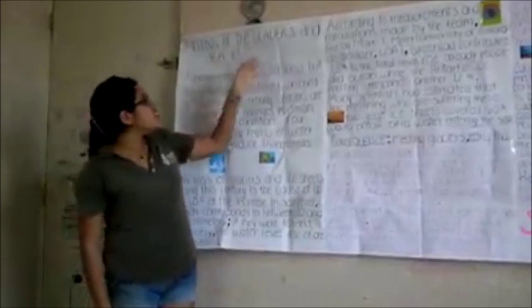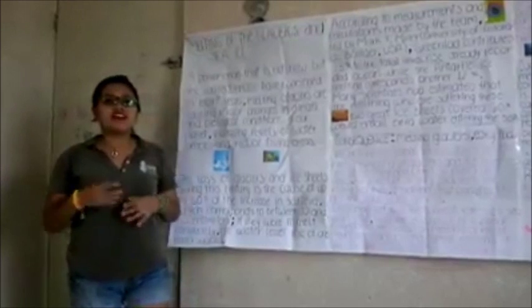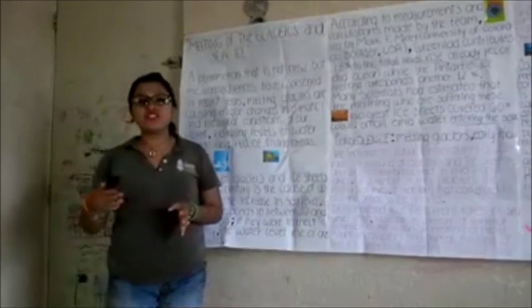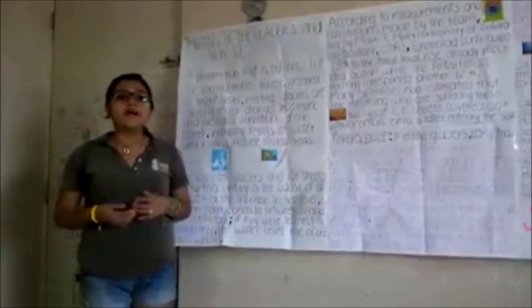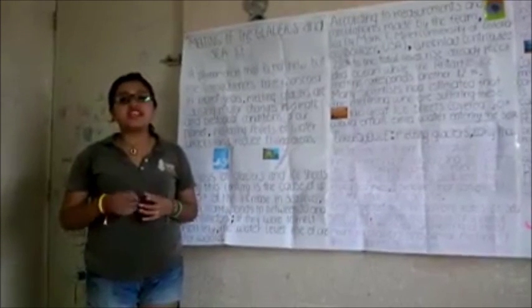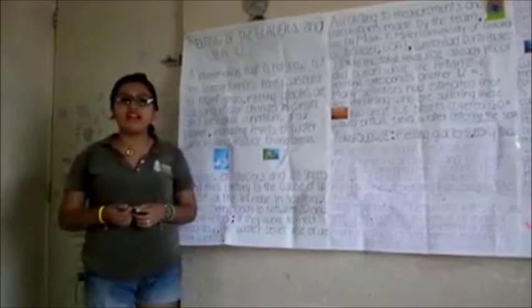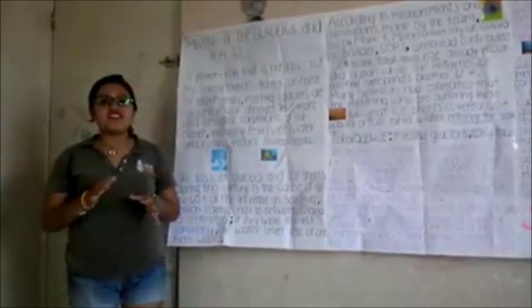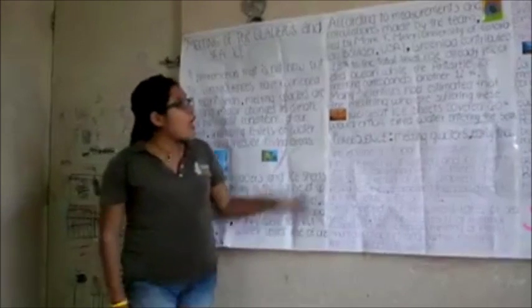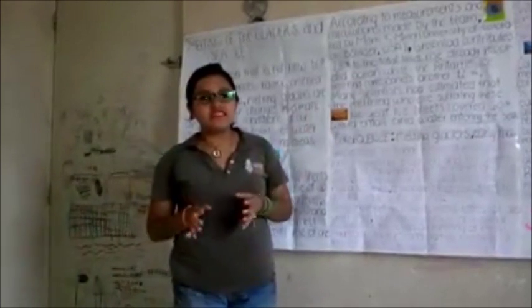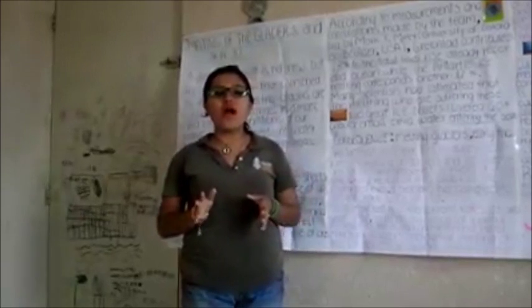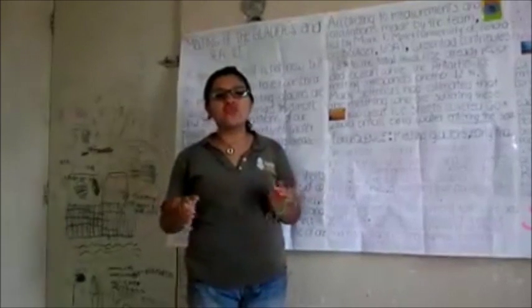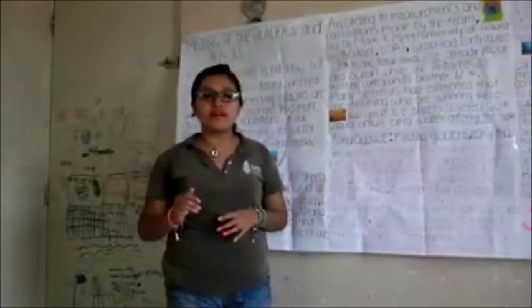Melting of the glaciers and sea ice is a phenomenon that is natural, but the consequences have accelerated in recent years. Melting glaciers are causing major changes in the climatic and biological conditions of the sea, increasing the level of water surface, and reducing the living area. Melting sea ice has estimated that much of the Arctic is suffering reductions in its ice sheet cover.